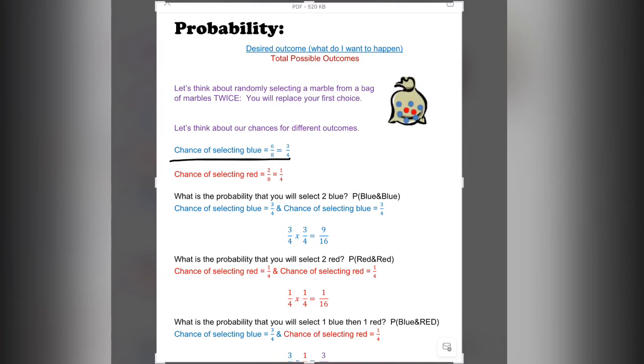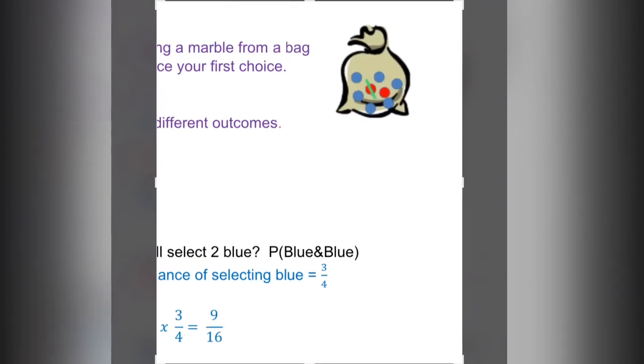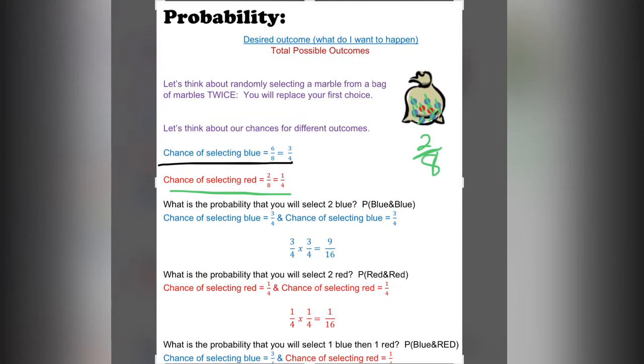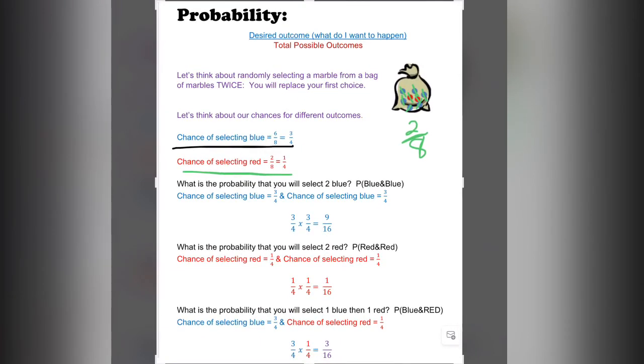Now let's figure out the chance of selecting red. I'm going to count the red ones: 1, 2. There are 8 total marbles in the bag, including the 2 red. The chance of selecting red is 2 out of 8. In simplest form, this is 1 out of 4.